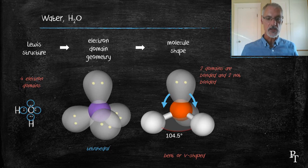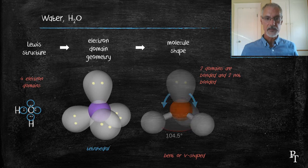This is called a bent, or V-shape. If I remove that unbonded pair, I'll have this. And again, your notes, you may want to show this.